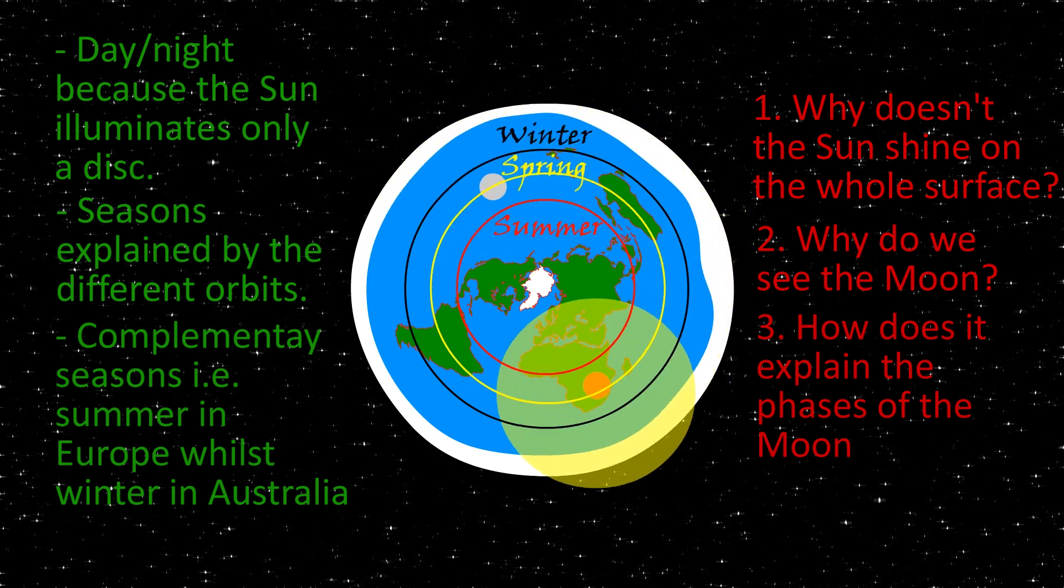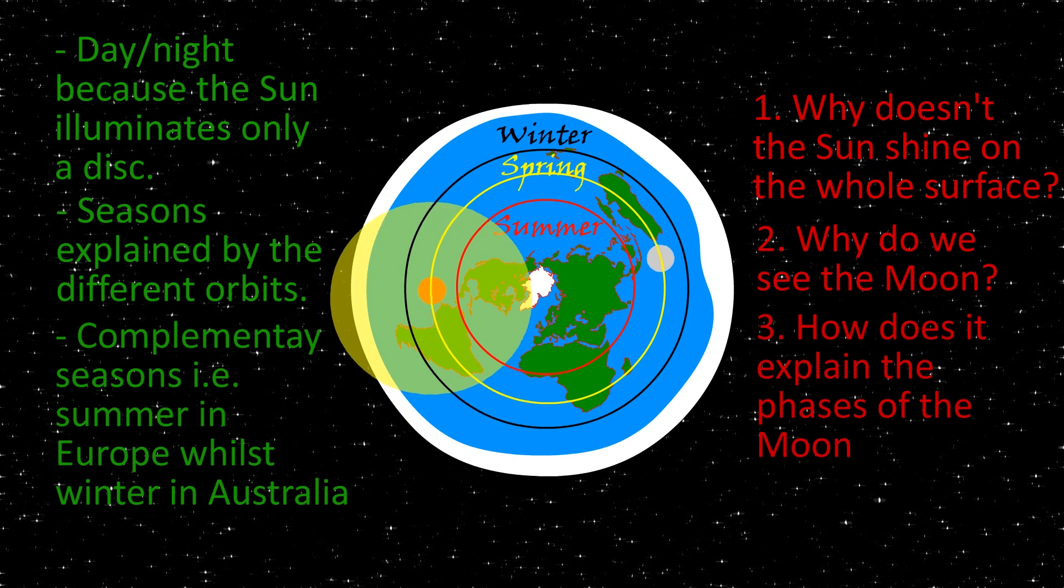One thing that it does explain however is sunrise and sunset. Flat Earthers claim it happens because the Sun fades into the vanishing point. That is the point at which the perspective projections of parallel lines appear to converge. Looking at the 2D road, we can change the perspective to give the impression of a third dimension.